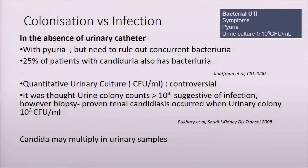Bacterial UTI is straightforward: symptoms, pyuria, and colony count in the urine. In candiduria it's different, because 25% of patients with candiduria simultaneously have concomitant bacteria in the urine. So pyuria is not sensitive enough to differentiate infection from colonization. The first step is you must rule out concomitant bacterial infection.